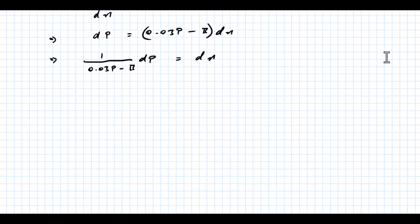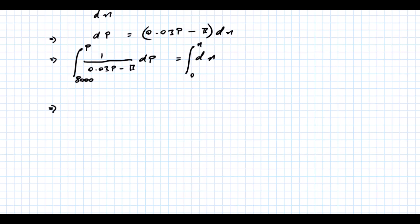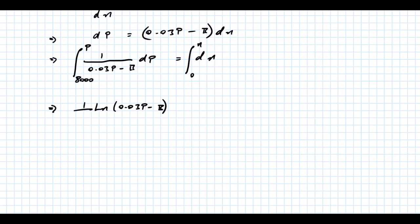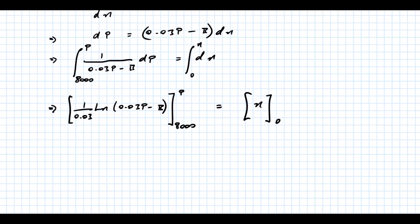Integrating both sides, the limits on the left for population go from 8,000 to P, and on the right years go from 0 to n. The left-hand side integrates to (1/0.03) log(0.03P minus B), evaluated from 8,000 to P. The right-hand side integrates to give n.